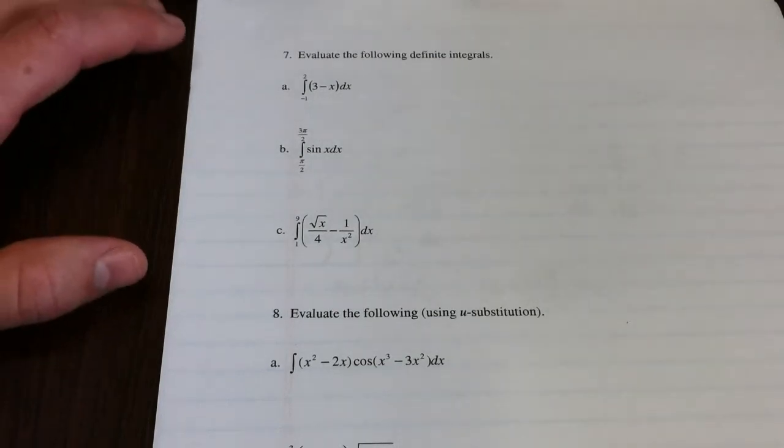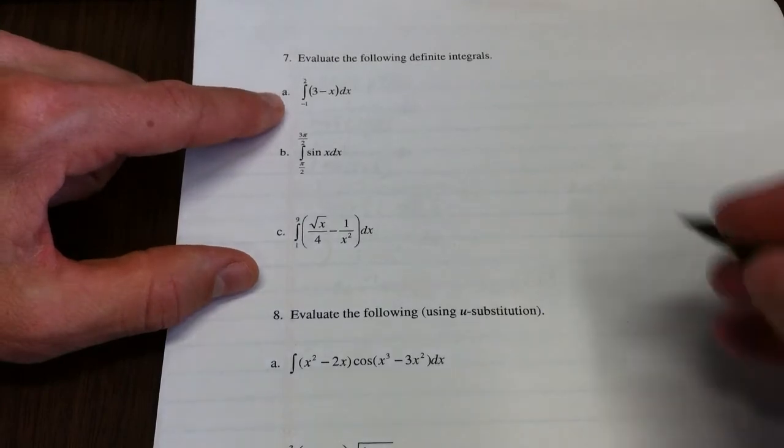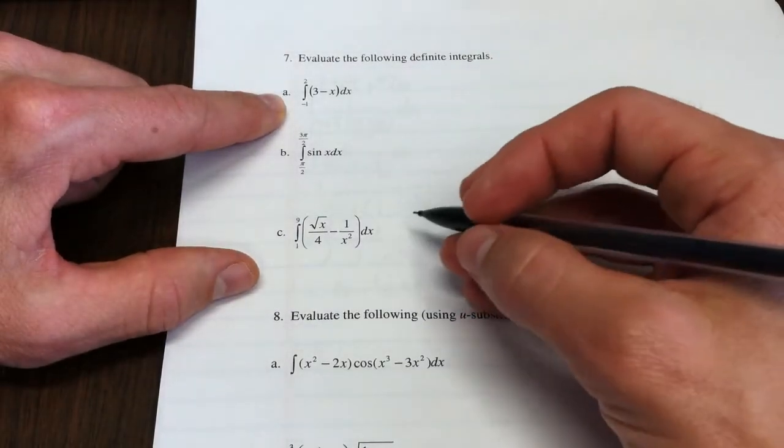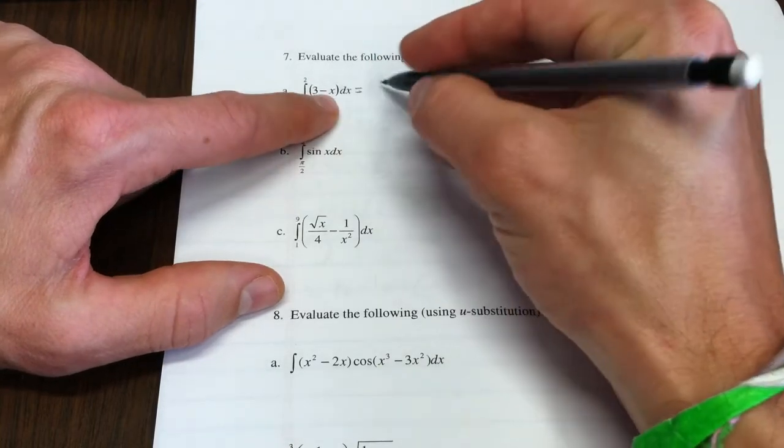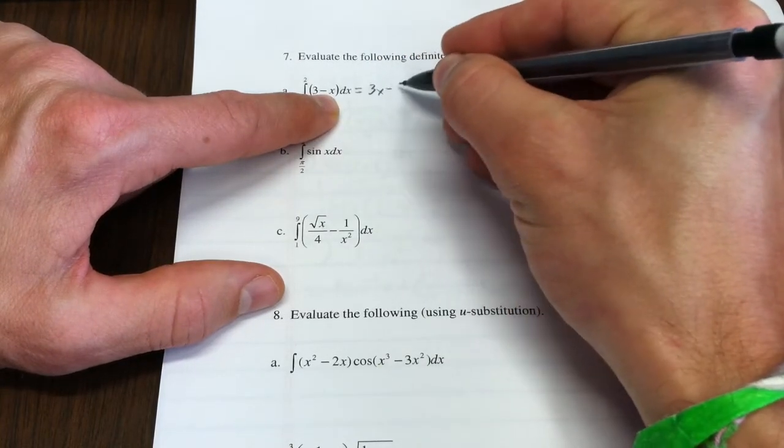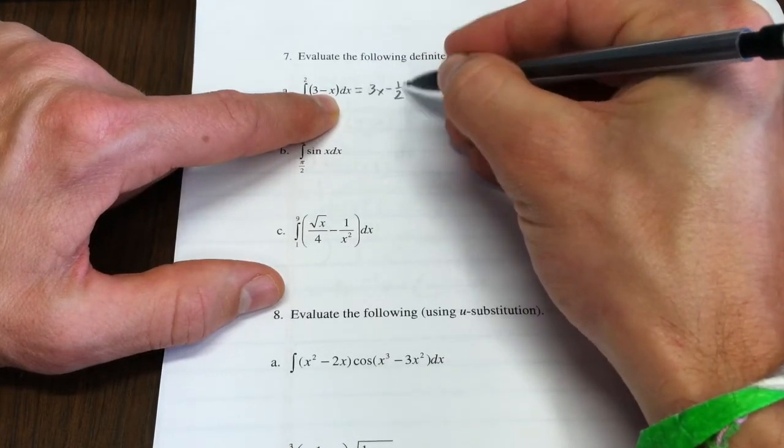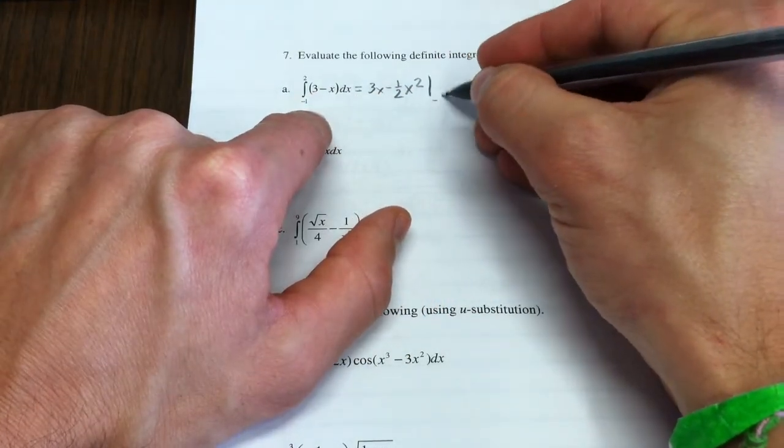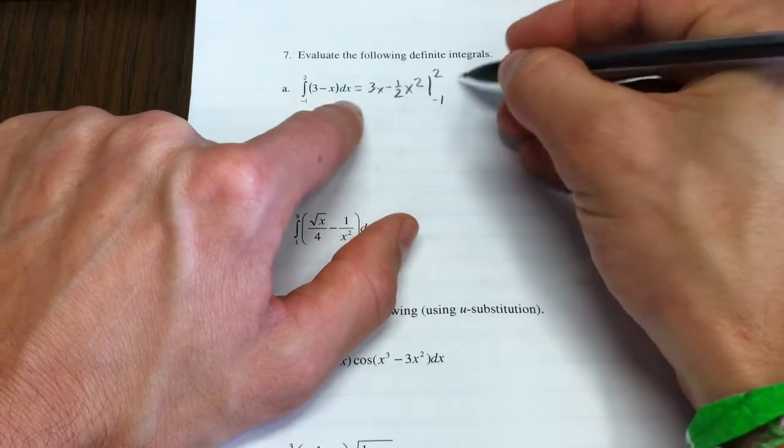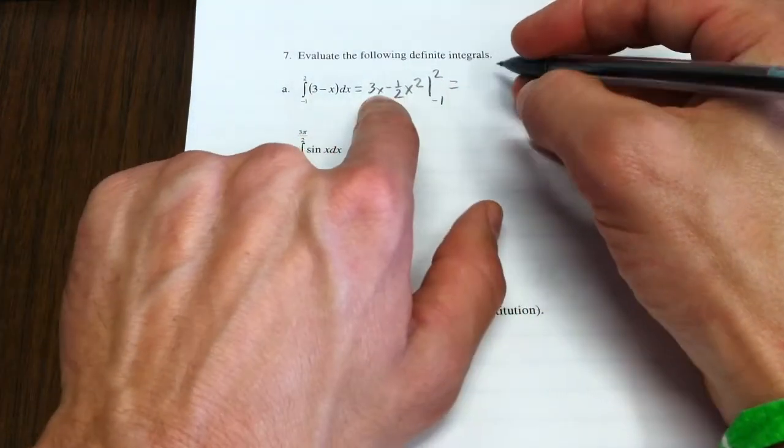Last list of problems for the review. This problem has a number of definite integrals, so what I'm going to do is find an antiderivative of this. 3x minus one-half x squared would have this as its derivative. I'll evaluate that from negative 1 to 2.